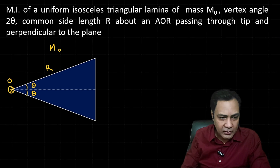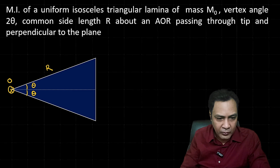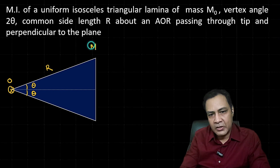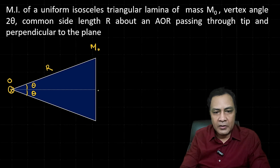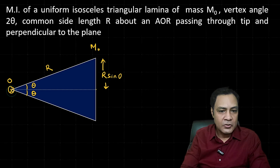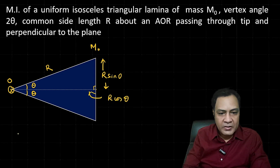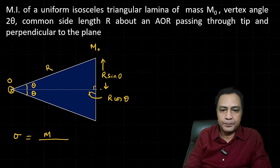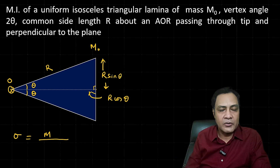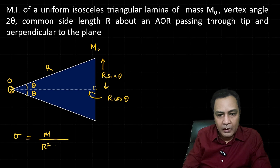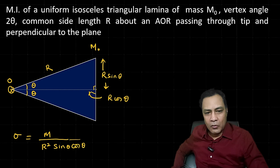Before proceeding, let me find the surface mass density σ. This length is r sinθ and this perpendicular from the tip to the opposite side is r cosθ. So σ equals mass over area. The area of the triangular lamina is r sinθ × r cosθ, so σ = m0 / (r² sinθ cosθ).